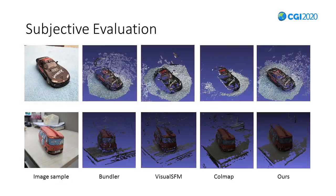Let's see how our work works out. First is a subjective evaluation. On the slide, there are image sets as examples: toy car and pencil case. Comparing to other structure-from-motion methods, we can see that Bundler contains holes and much background noise. Visual SFM lost more information on the surface. ColdMap nearly lost one side of points in the toy car image set. Our method seems to preserve more details and produces less noise.